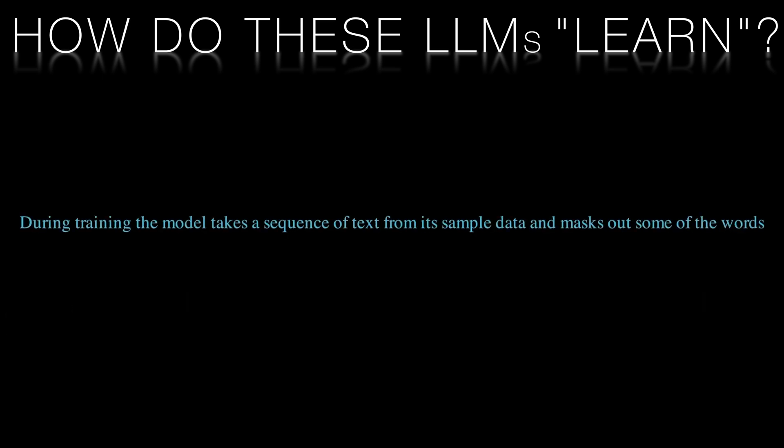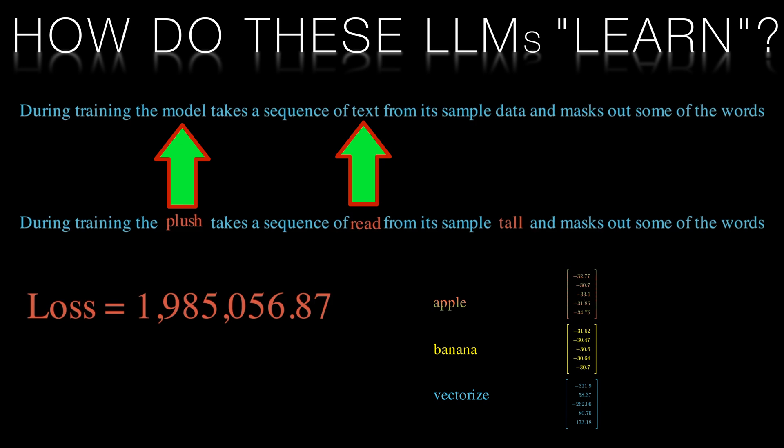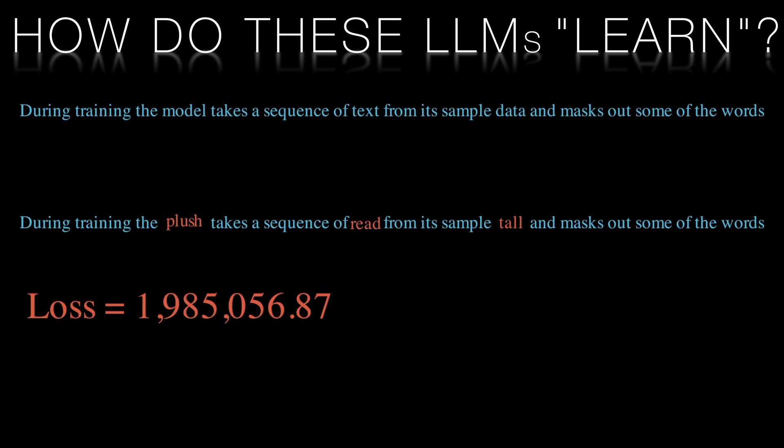During training, the model takes a sequence of text from its training data and masks out some of the words. It then has to predict the masked out words. At first, it will get them wildly wrong. However, it can now quantify the error using the embedding vectors and a loss function that measures the difference between the predicted and the actual target outputs. The model's weights are adjusted using a technique called backpropagation and an optimization algorithm to minimize the loss. This process is repeated over multiple iterations called epochs and vast volumes of training data. As the training progresses, the model becomes better at predicting the masked words or tokens, ultimately enabling it to generate coherent and contextually relevant text.